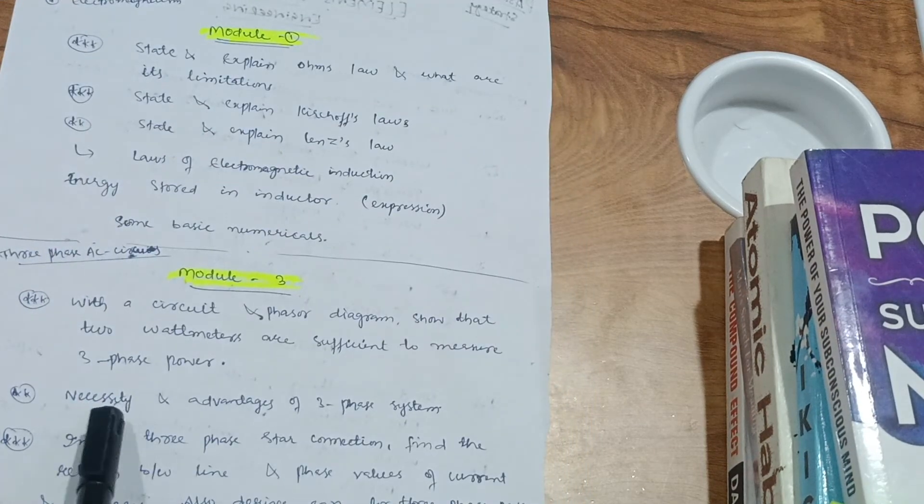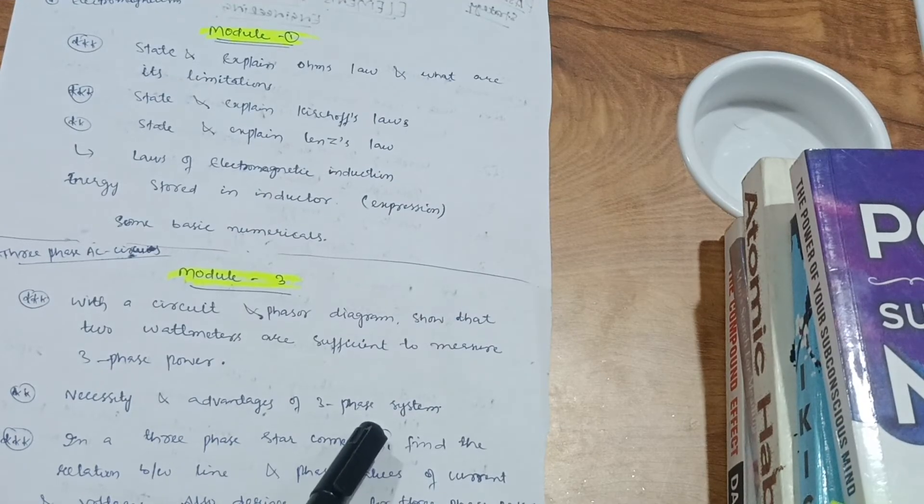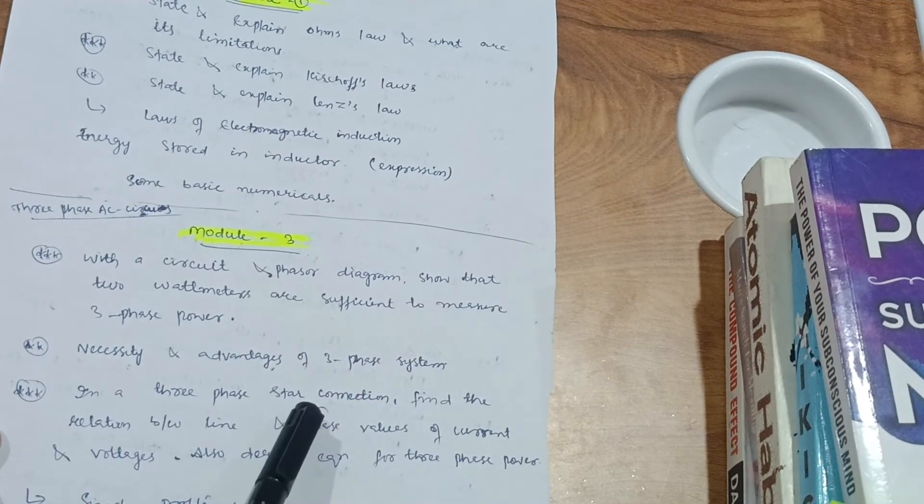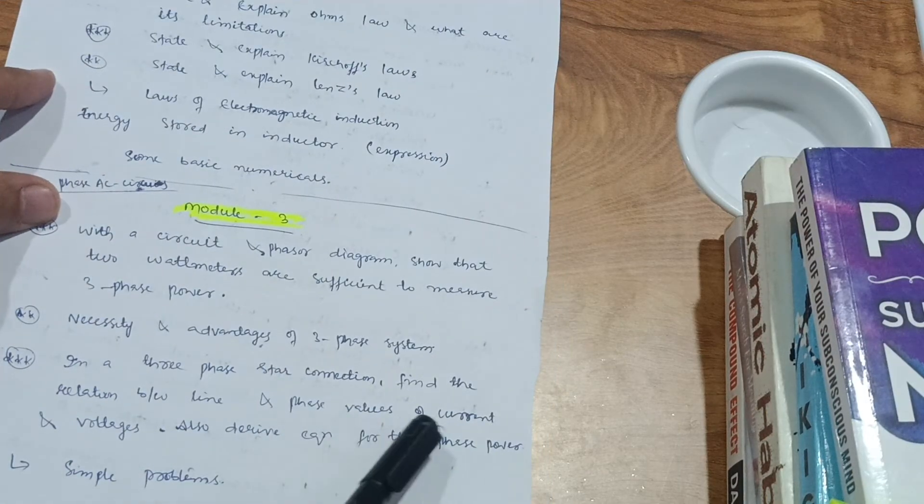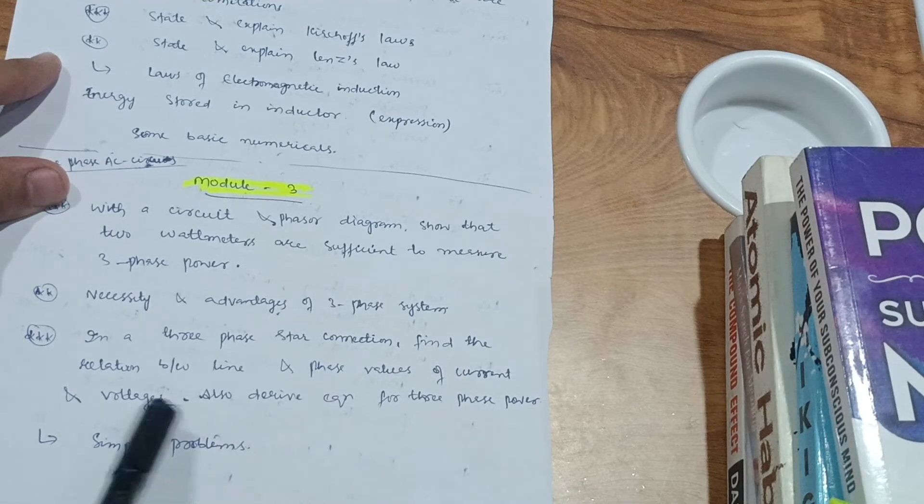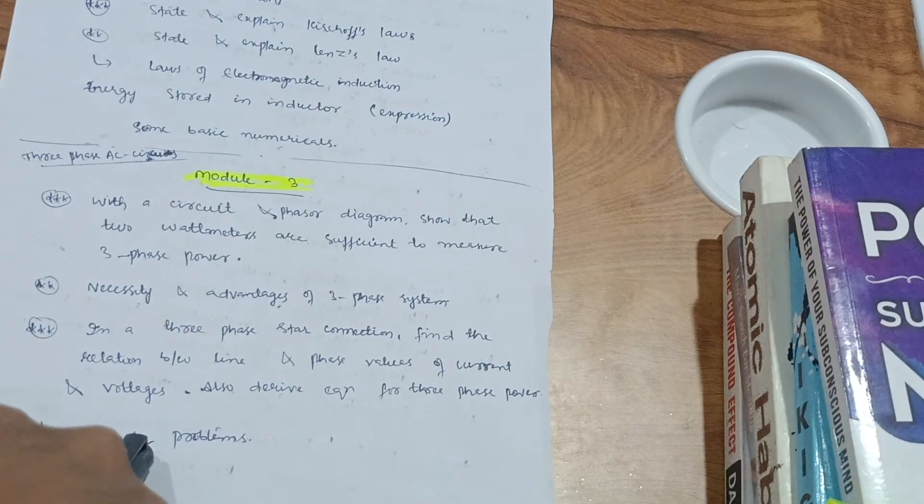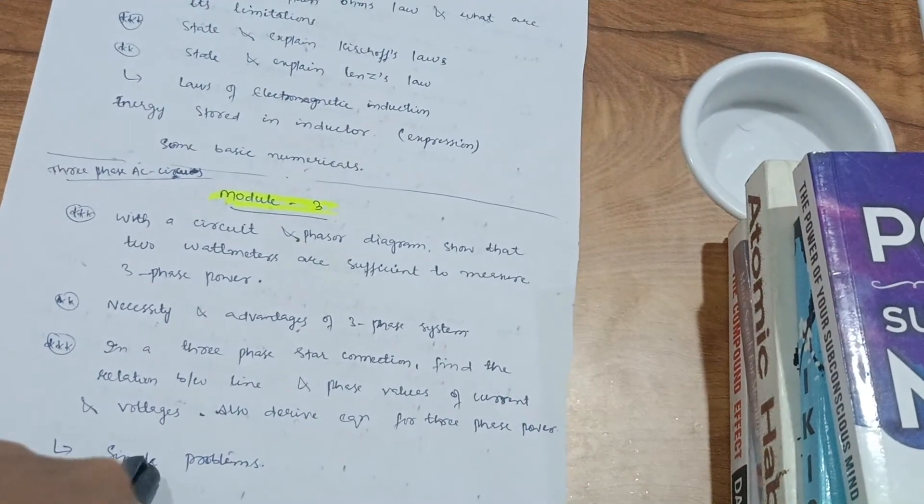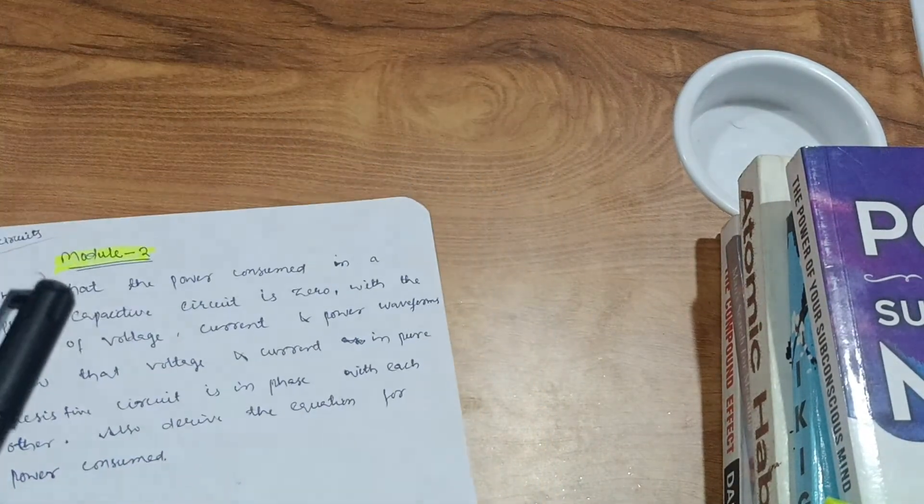Next one, you have to focus on need and advantages of three-phase system. Next one is in a three-phase star connection, find the relationship between line and phase values of current and voltages, also derive equation for three-phase power, and try some also simple problems. No need to go for tougher ones, so at least try some basic problems in this Module 3.